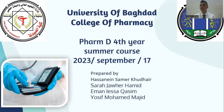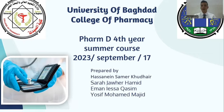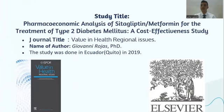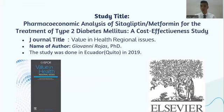Today we have a Pharmacoeconomic Study. The article is titled 'Pharmacoeconomic Analysis of Sitagliptin-Metformin for the Treatment of Type 2 Diabetes Mellitus: a Cost-Effectiveness Study.' The journal title is Value in Health Regional Issues, authored by Giovanni Rogers. The study was done in Ecuador, Quito, the capital of Ecuador, in 2019.